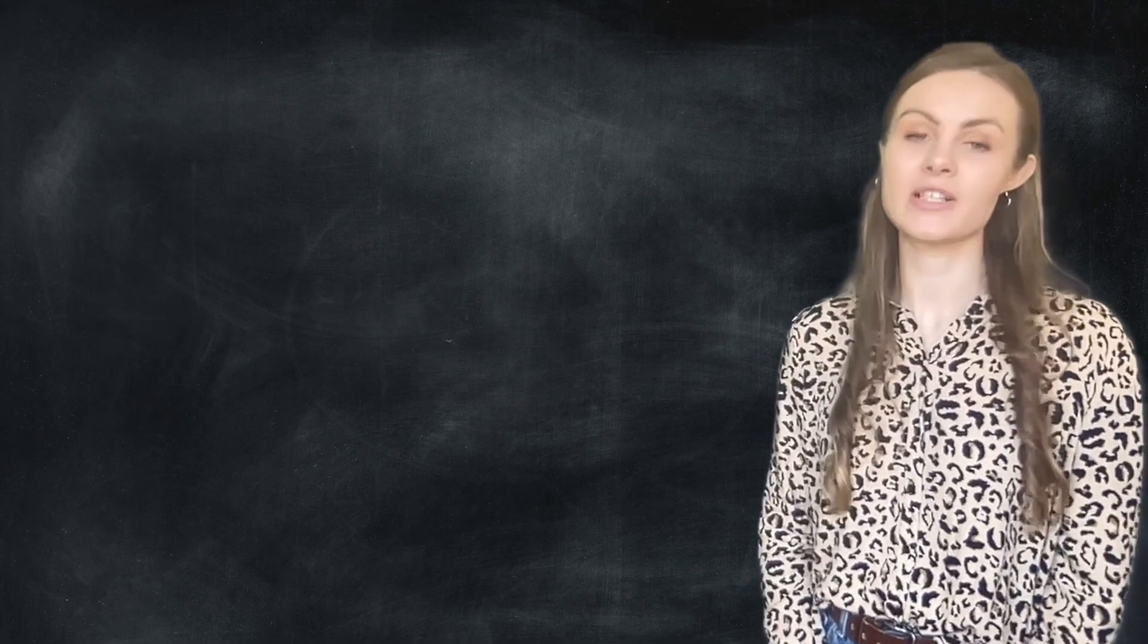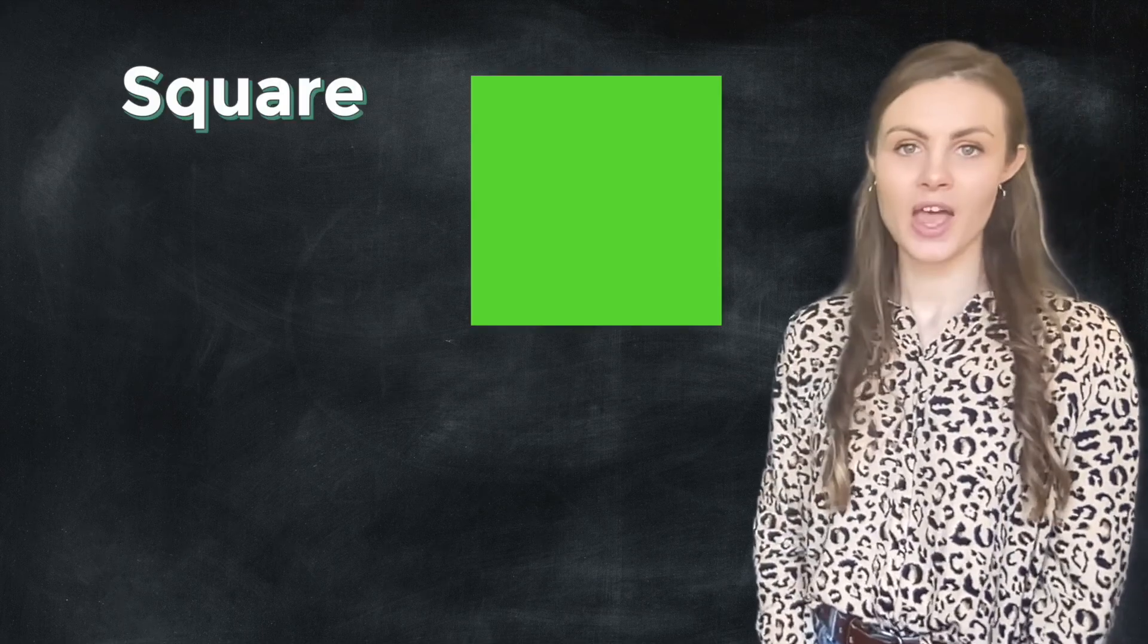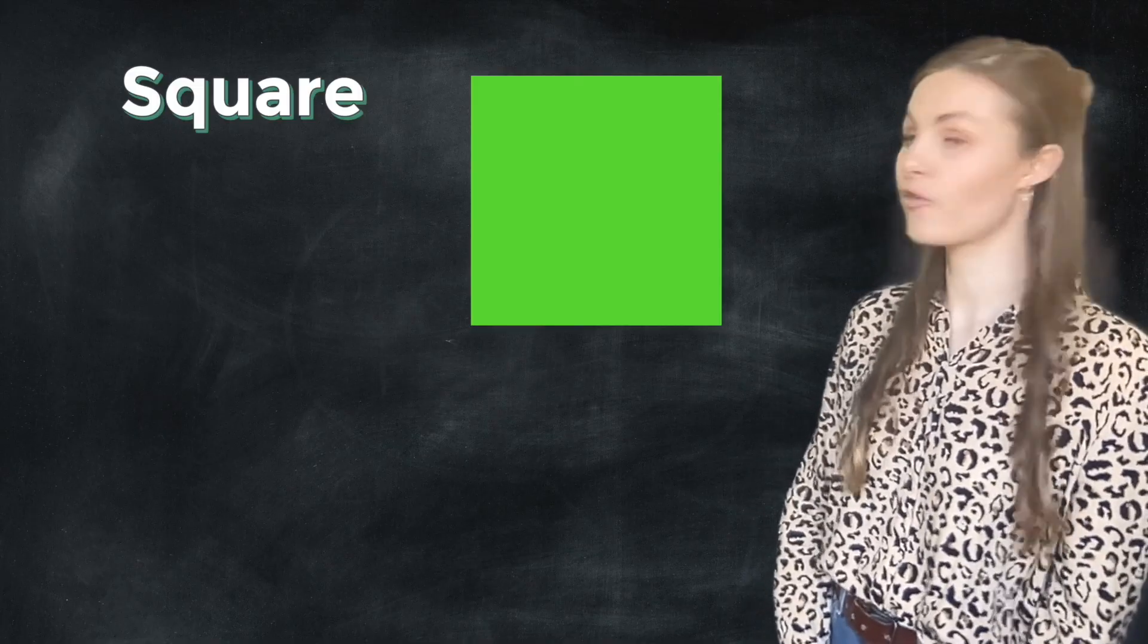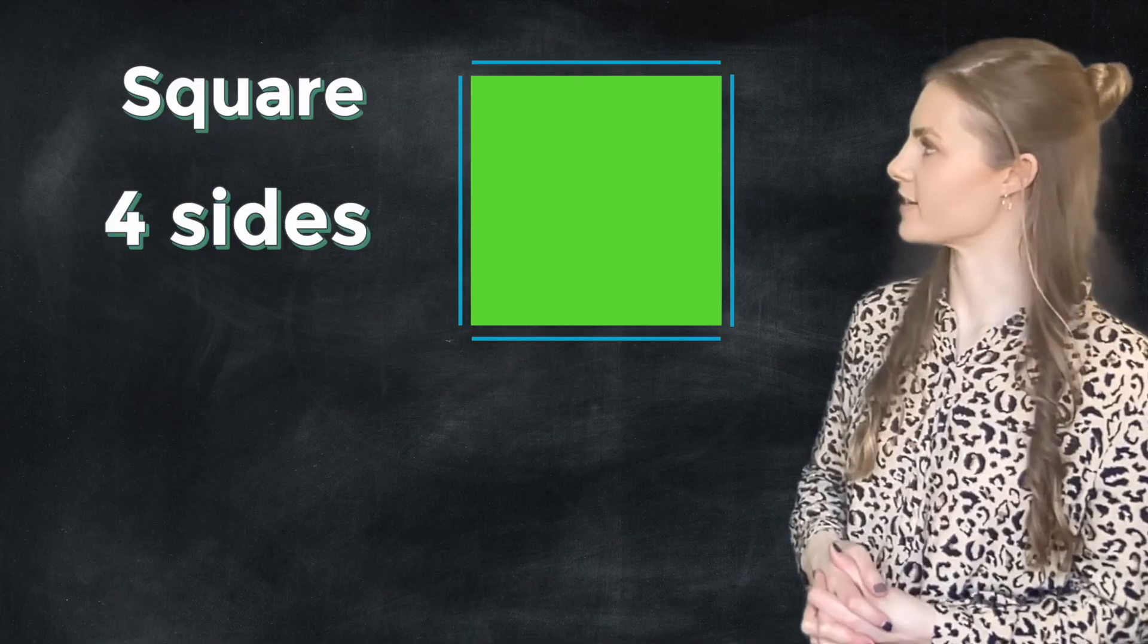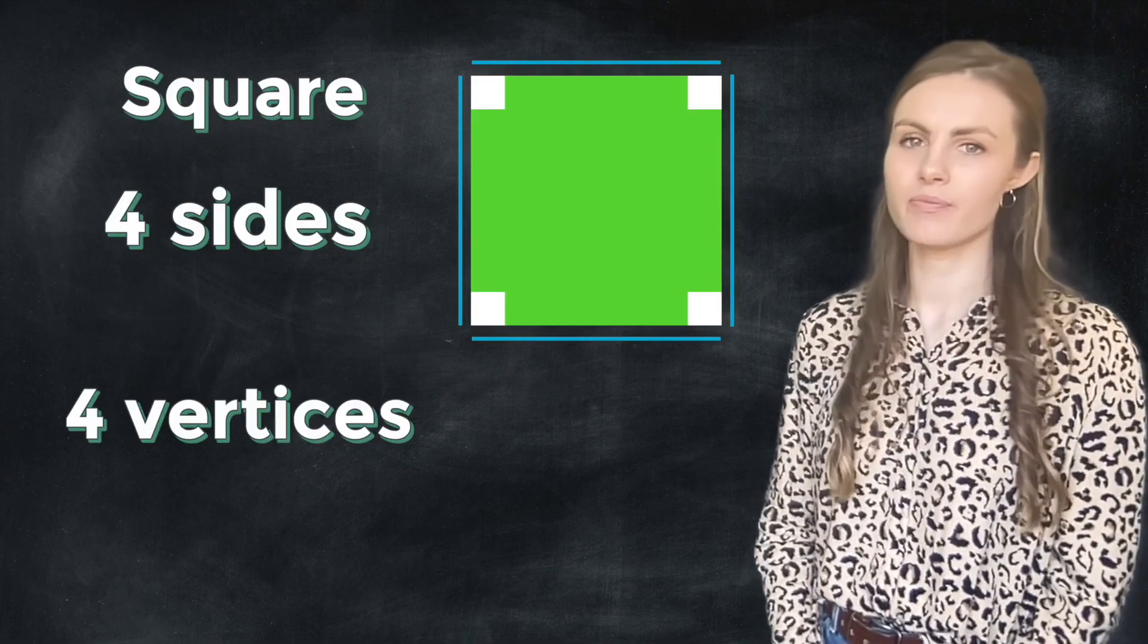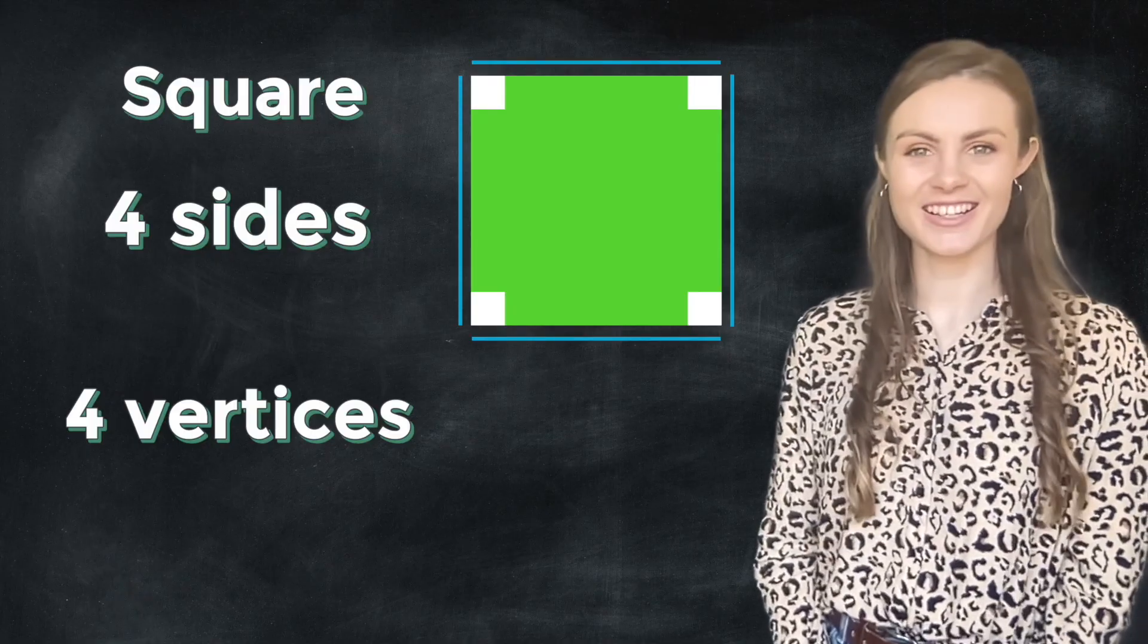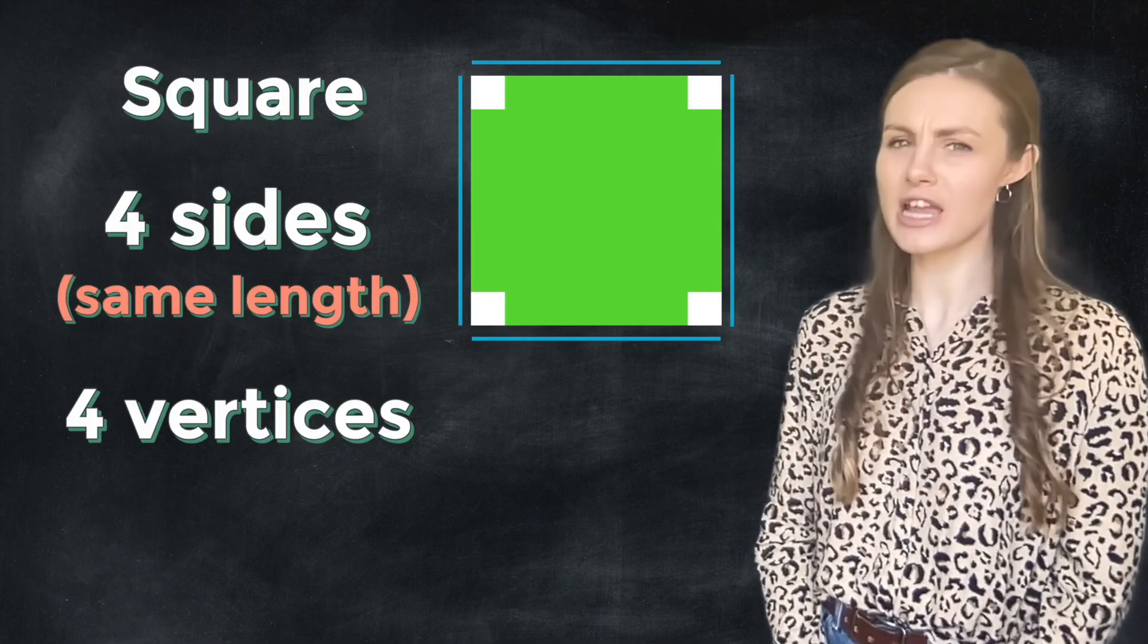Let's look at another shape and see what we can find out. We've got up here a square. What do we notice about this square? Well, I can see it's got four sides. It's also got four vertices. Interesting. There's something else that's special about a square. Can you spot it? Ah, all four sides are the same length and that's really important.